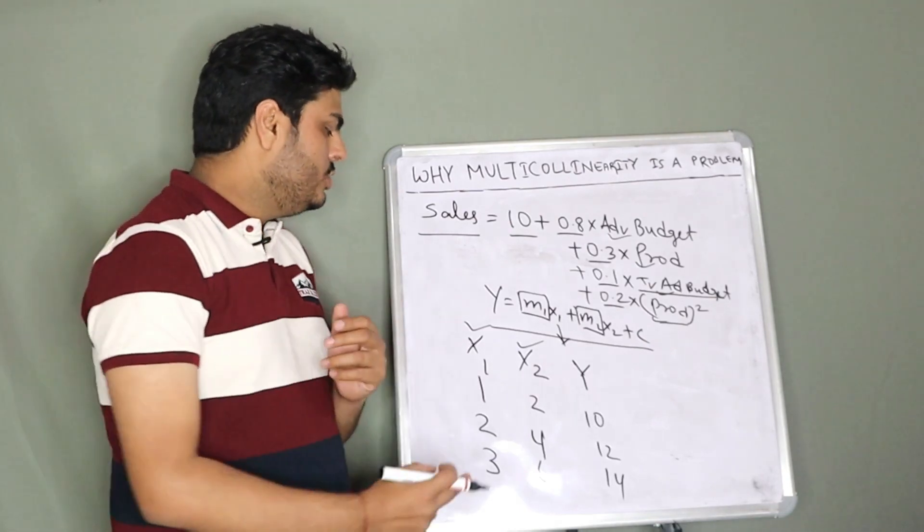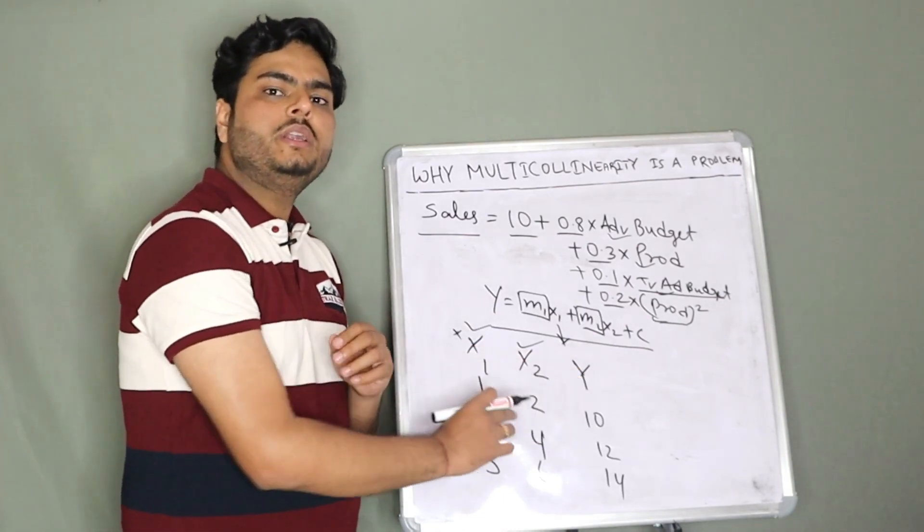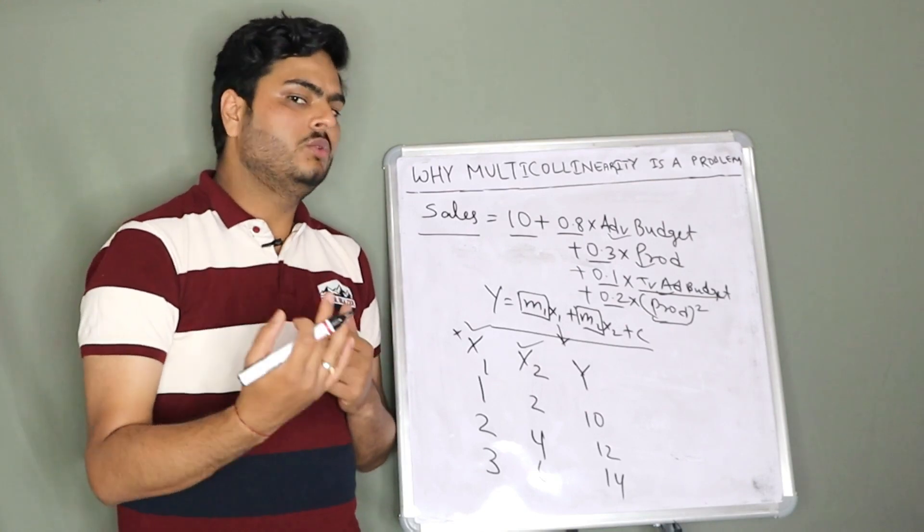In the second run, you drop one variable. Let's say drop x1 and run the model with only y and x2. See how your p-value is looking and how your coefficient is looking.